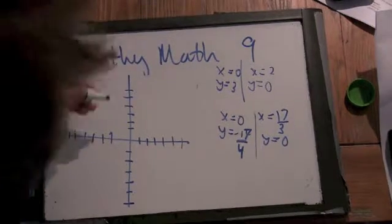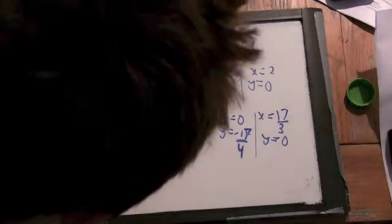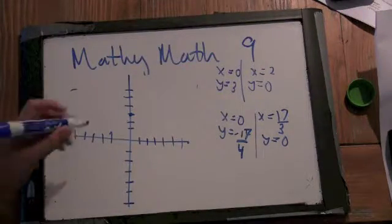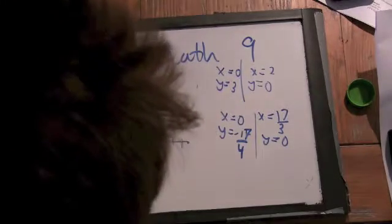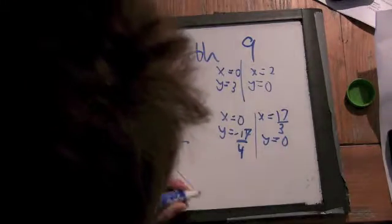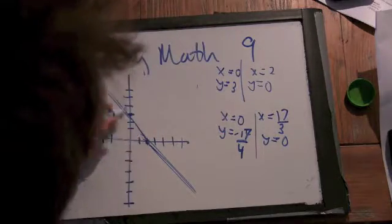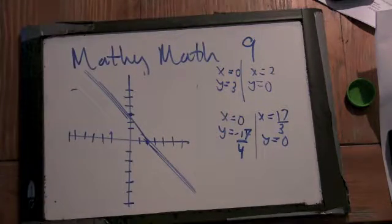So, x equals 0, y equals 3 is this point. So, we're at 3 and 2, 0. So, here's one of our lines, roughly.